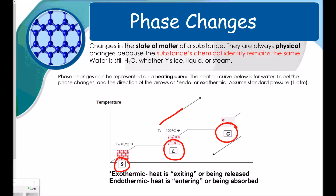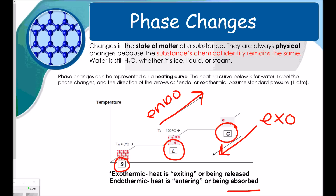As you climb the stair step, this is called endothermic, where energy is being absorbed. As you go down, this is called exothermic. A good analogy: if you're going into a building, you go up the stairs — that's endothermic, heat is being absorbed or entering. If you're exiting a building, you go down the stairs — that's exothermic, heat is being released or exiting.